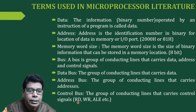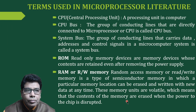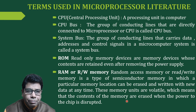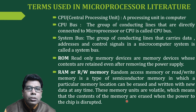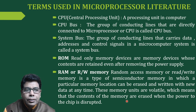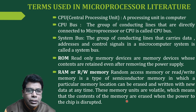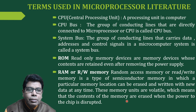Here we have shown the read-write signals and the address latch enable, or ALE signal — these are different control signals. The next term is central processing unit, or CPU, which is the processing unit and brain of the computer. The CPU bus is the group of conducting lines directly connected to the CPU or microprocessor. When we refer to the system bus, it combines the data, address, and control signals together, and in a microcomputer system that is called the system bus.